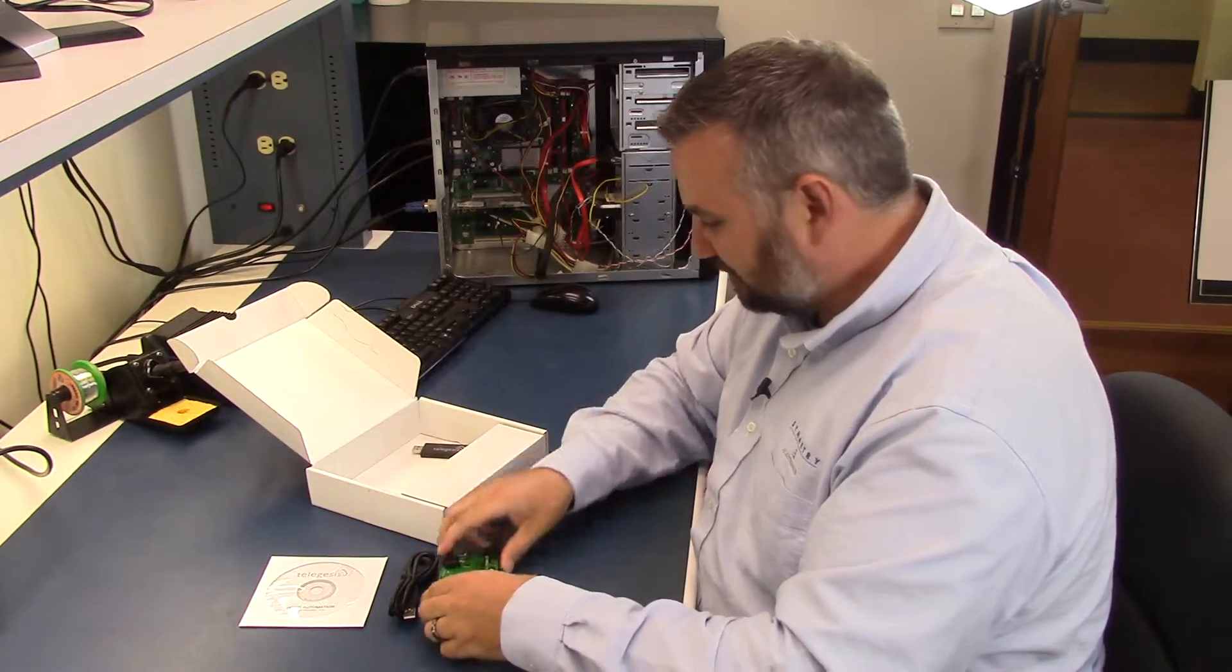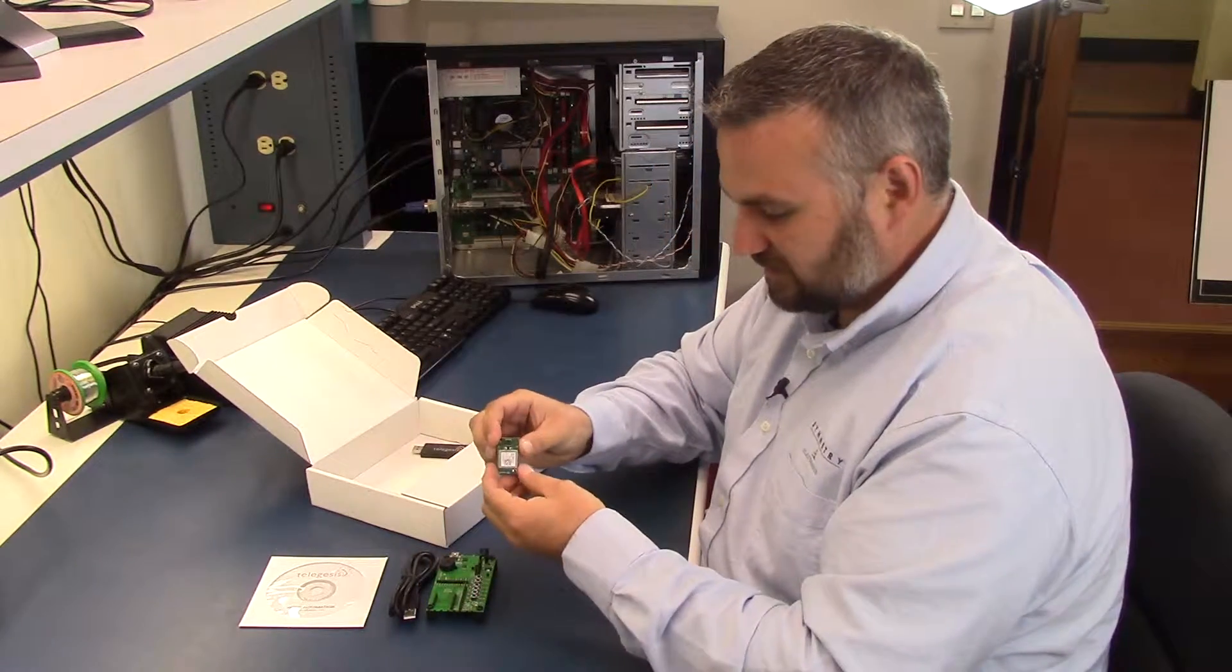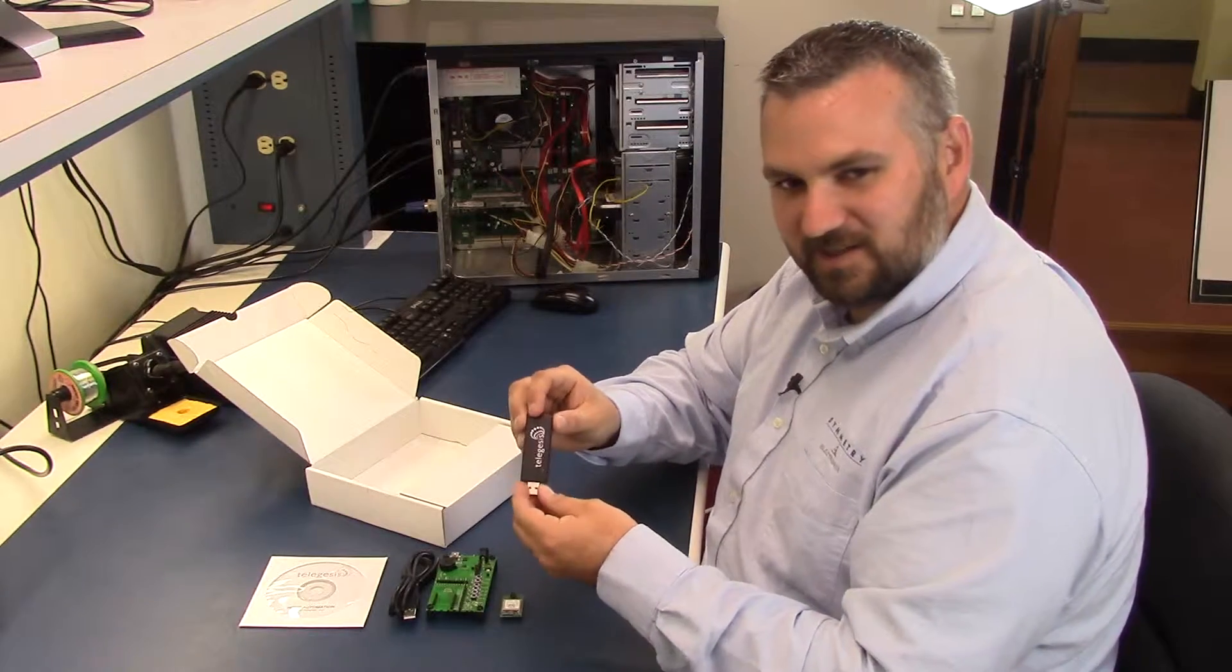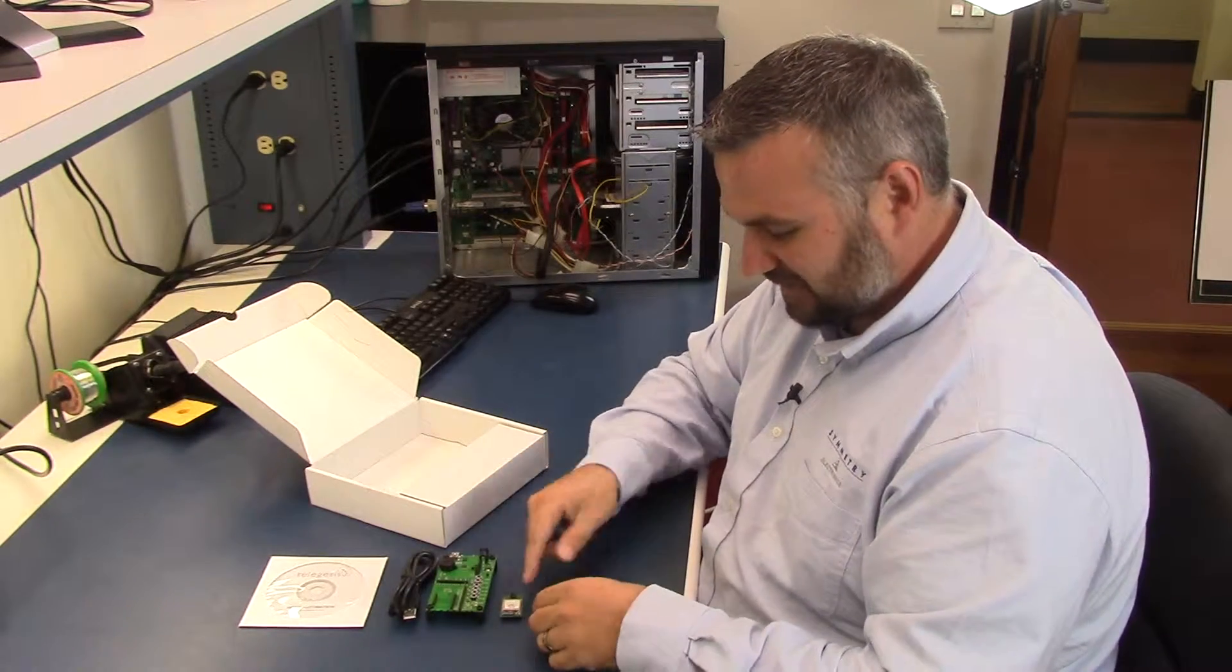you get your dev kit, and then there's the Zigbee module that you can see plugs right into the dev kit here, and then you get a USB dongle that plugs into your PC to communicate with the dev kit and the Zigbee module.